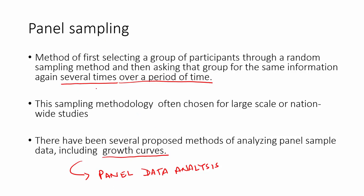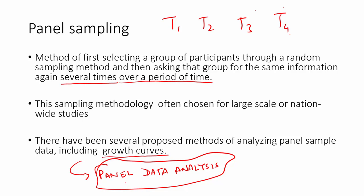Panel sampling is when you select a group of participants and do random sampling — such as simple random sampling — but you continue to do that for several time periods: T1, T2, T3, T4, which could be year one, year two, year three, or month one, two, and so on. It can be used for both probability and non-probability sampling. It's used in marketing to see the growth of consumption for a particular group, or how people's opinions change over time. It's used in panel data analysis, which requires both cross-sectional and time series data — combining both.